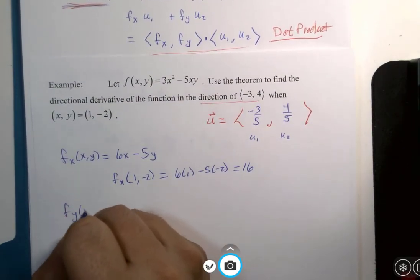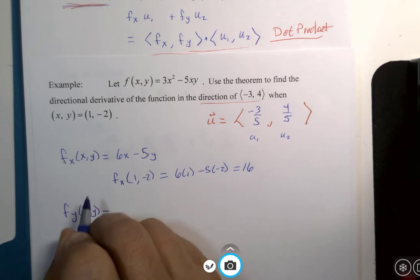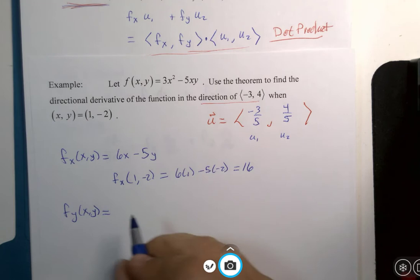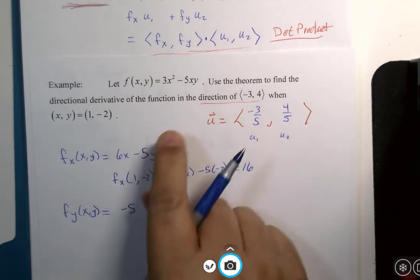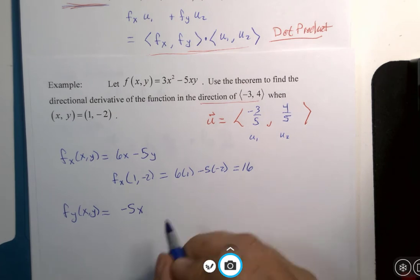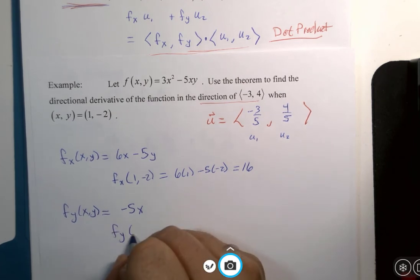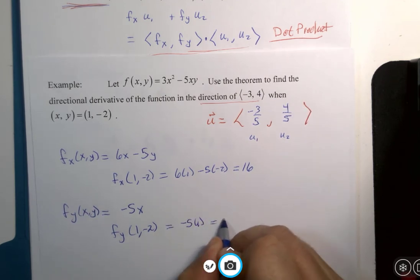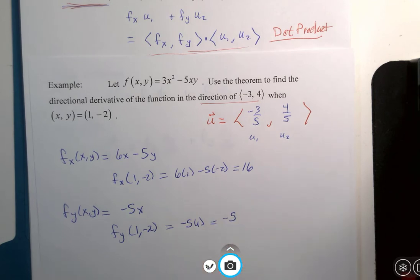The y partial derivative of the function, well, that's going to be 0 minus 5. If y is the variable derivative of y is 1 minus 5x is left over. And if I do that computation at the given point, that's going to be negative 5 times 1, which is negative 5. Okay? That's not so bad.